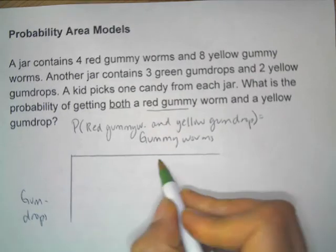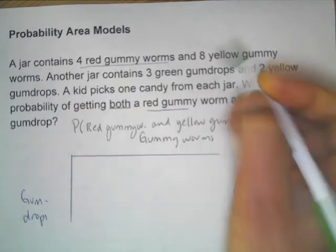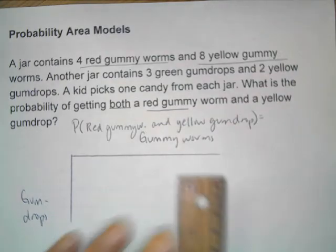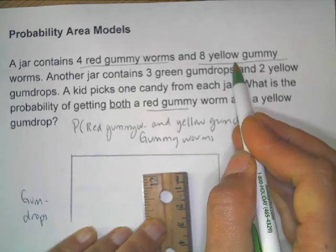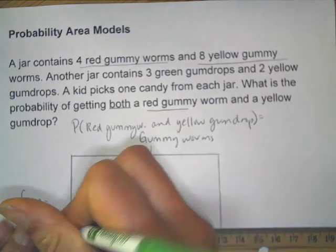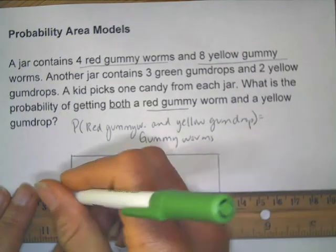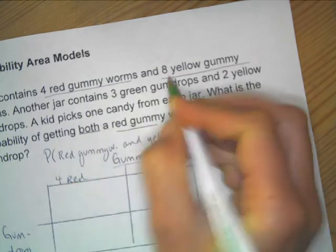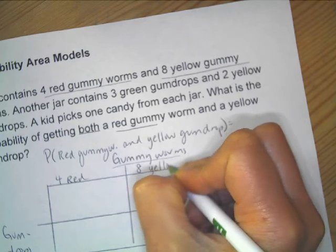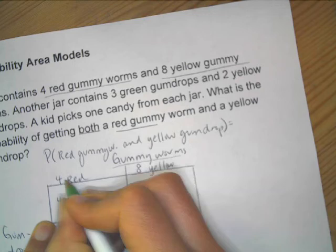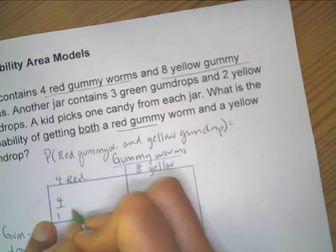In terms of the gummy worms, there are red gummy worms and yellow gummy worms. You can make this proportional, but a lot of times people just split it evenly in half, so I'm going to make a generic rectangle. I have four red gummy worms, and if someone were to pull out a gummy worm, there's a probability of four out of the total — four plus eight — which is 12.